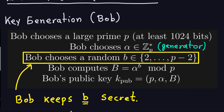Bob, or whoever wants to sign the messages, is going to choose a large prime of at least 1024 bits for security reasons, because discrete logs of this length are really difficult to compute. Bob also chooses alpha, which is an element of Z_p* and a generator of this cyclic group. Bob then chooses a random number between 2 and p-2 inclusive. This random number has to be kept secret — it is actually the private key for Bob.